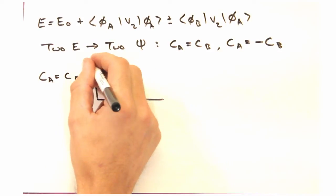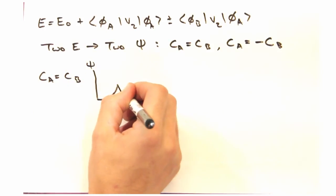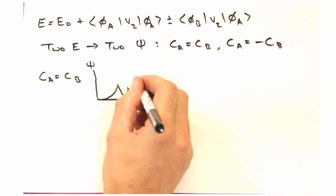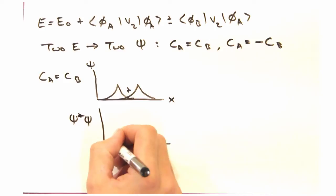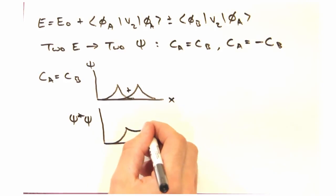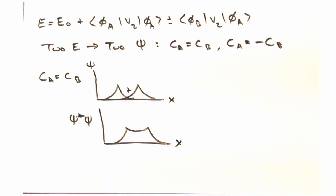When we look at the first case, where Ca equals Cb, the atomic wave functions would look like this. This is the low energy case. We can look at the electron density by plotting psi star psi, and it looks like there's a significant electron density between the two nuclei.